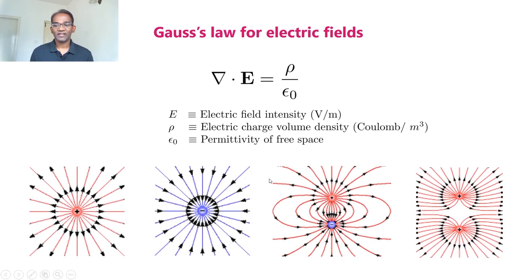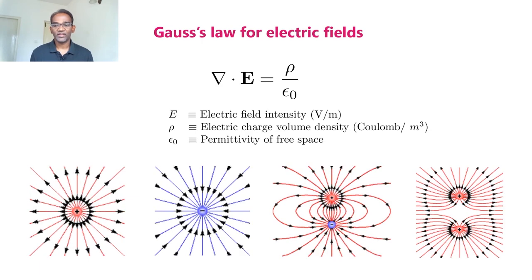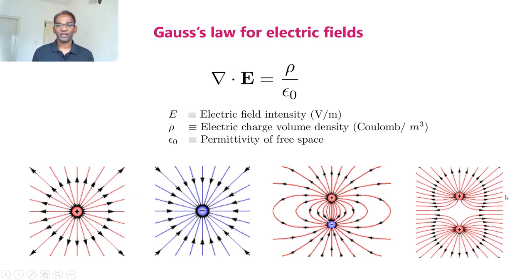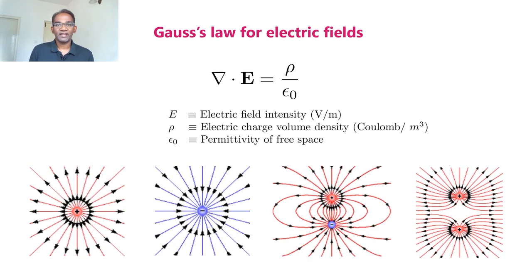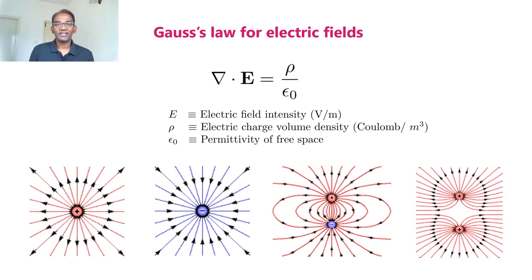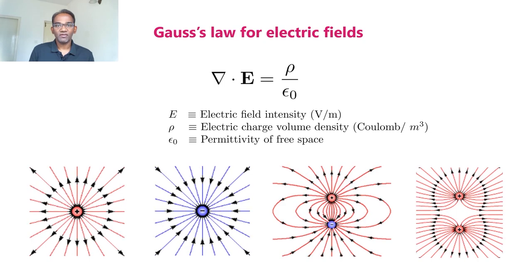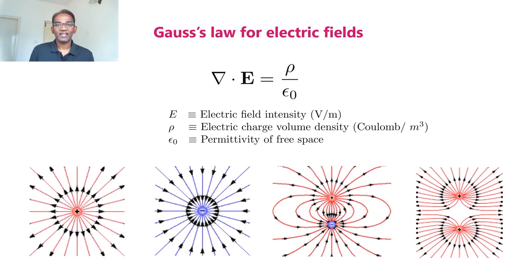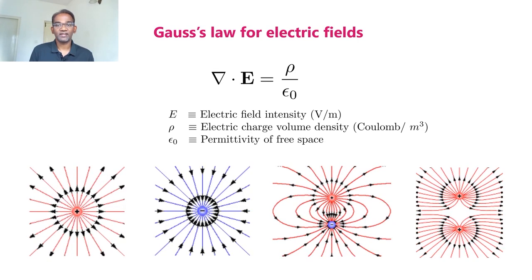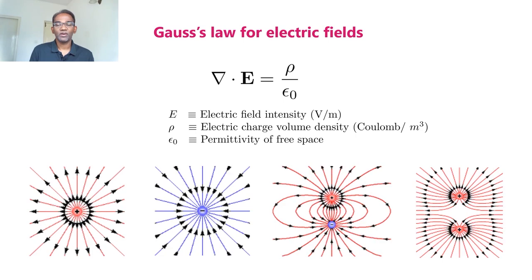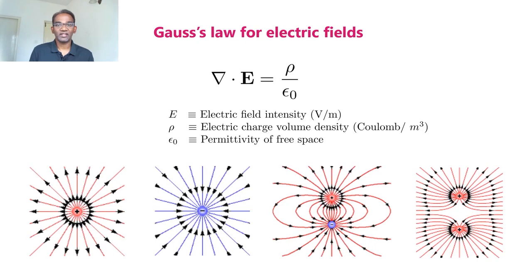Electric field lines will never cross each other if the charges are like charges, as you see in the fourth figure. So mathematically, when you take the operation del dot, that indicates divergence. Divergence means net outward flow. This equation states that the net outward flow of electric fields is directly proportional to the electric charge volume density rho, or precisely equal to rho divided by epsilon zero. This is Gauss's law for electric fields.